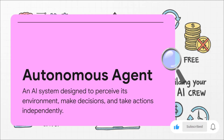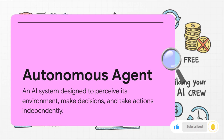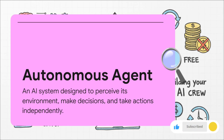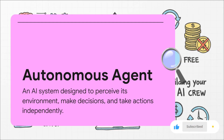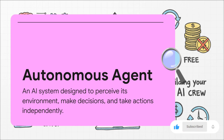So what's the magic word that makes an agent an agent? It's that one right there: autonomous. An autonomous agent doesn't need you to hold its hand every step of the way. You give it a big picture goal, and it has the power to look at its digital environment, make its own decisions, and take action all by itself to get the job done. It's a total game changer.